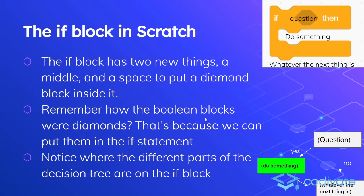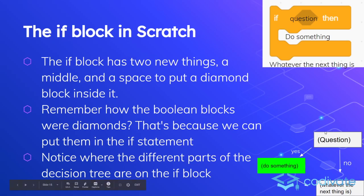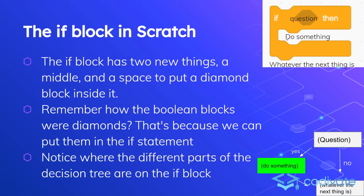Moving on to actual Scratch — we have the if block. We can map exactly where each part of our diagram goes onto this if block. We have 'if question' — that hexagon is the diamond-shaped Boolean block with two numbers and an operator. If it's true, then do something. If this question is true, go to the yes. That do-something goes in the middle. So we'd put: if 50 is equal to 50, say it. After that, it does the next thing regardless of whether the block ran, because if the Boolean is false, it goes to the no section — which just skips and goes to the next thing.